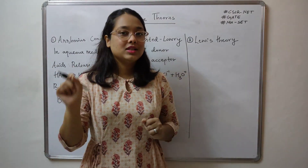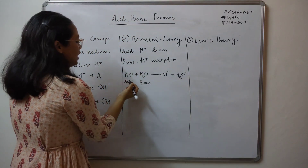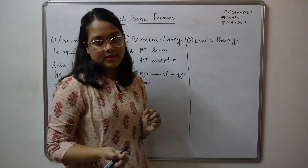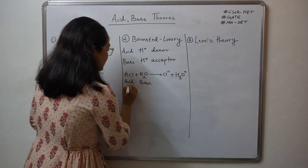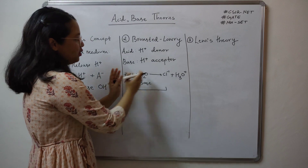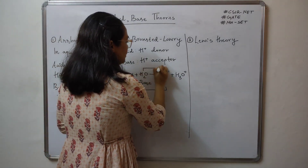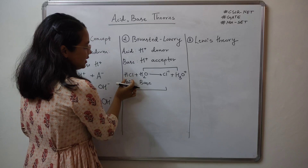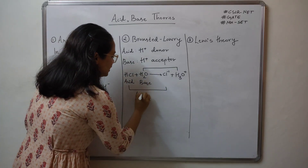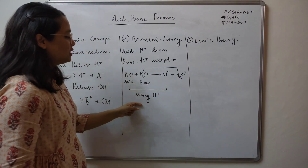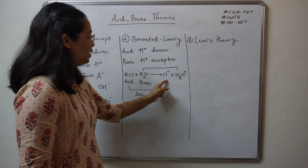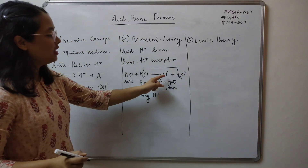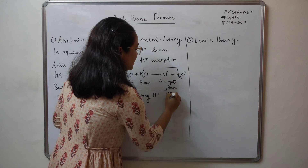Now look for the same formula species. HCl is getting converted into Cl minus, and H2O is getting converted into H3O+. HCl loses H+ to become Cl minus — that means Cl minus becomes your conjugate base. If this is an acid, this will become a conjugate base. Water is acting as a base; from H2O you are getting H3O+. If this is a base, H3O+ will become your conjugate acid.